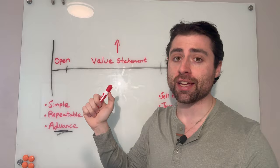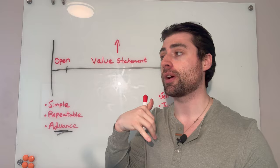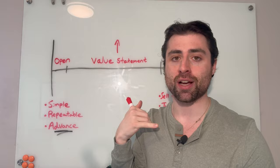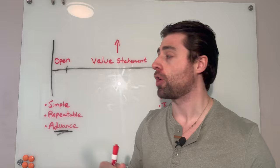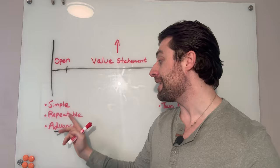I think a lot of new SDRs, when they're coming in, they're trained to use these crazy pattern interrupts, permission-based openers. Hey, this is a cold call. Do you have 16 seconds for me to tell you why I'm calling? And the prospect's like, huh, what? And they get this weird answer back that's different every time too, so you don't know what to expect. And then it takes like 30 to 45 seconds to even get into why you're calling. I think the purpose of a cold call opening is to keep it simple, repeatable, and advance to step two.